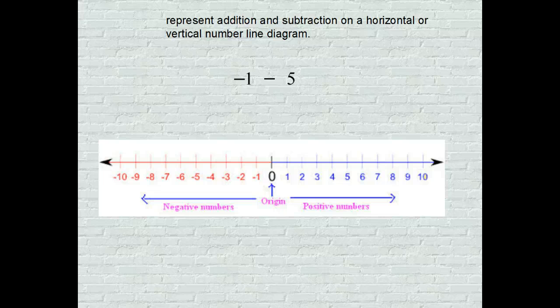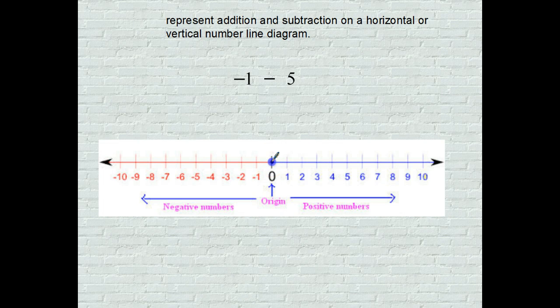This is negative 1, so now we're starting with negative 1 and we are subtracting 5 from it. So 0 goes to negative 1, draw your arrow.